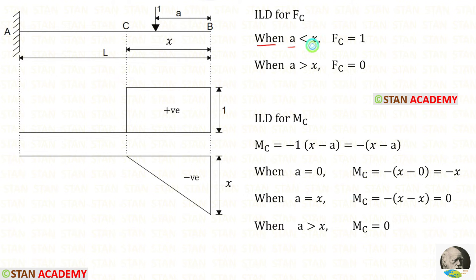When A is less than x, the shear force at C will be 1. You can see that when this load moves from point B to point C, the shear force at point C will always be 1.